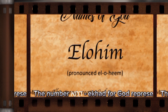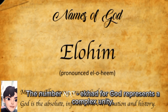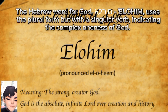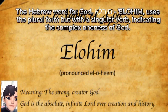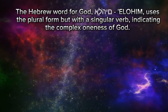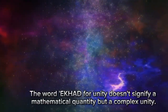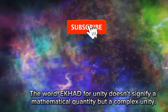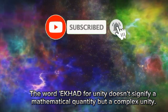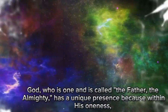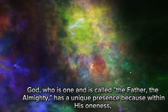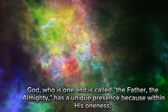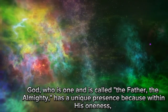The number 'echad' for God represents a complex unity. The Hebrew word for God, Elohim, uses the plural form but with a singular verb, indicating the complex oneness of God. The word 'echad' for unity doesn't signify a mathematical quantity but a complex unity.